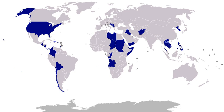1921, Panama and Costa Rica: American naval squadrons demonstrated in April on both sides of the isthmus to prevent war between the two countries over a boundary dispute. 1922, Turkey, September and October: a landing force was sent ashore with consent of both Greek and Turkish authorities, to protect American lives and property when the Turkish nationalists entered Izmir, Smyrna. 1922–1923, China, April 1922 to November 1923: Marines were landed five times to protect Americans during periods of unrest. 1924, Honduras, February 28 to March 31 and September 10 to 15: U.S. forces protected American lives and interests during election hostilities.